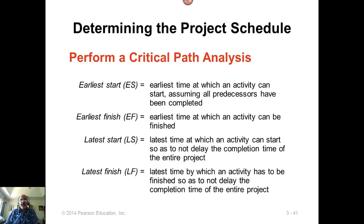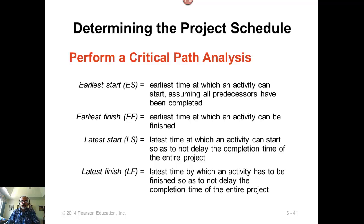By drawing the network and determining all the unique paths from start to finish will give you the project completion time, the critical path, and the critical activities. But that approach will not give you the actual start time and finish time for each individual activity. That can be determined by using what are called forward pass and backward pass, or forward scheduling and backward scheduling.